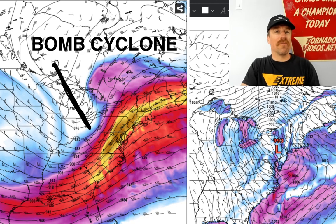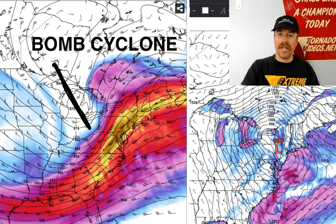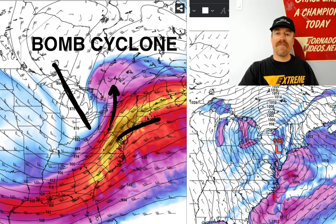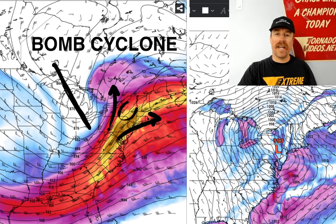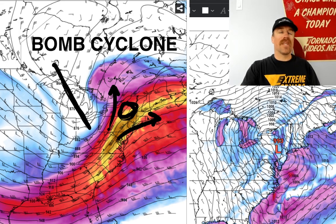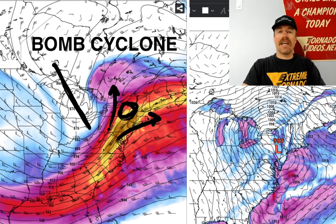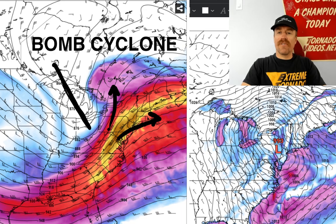The bomb cyclone is dropping well in excess of 12 millibars — in fact, 24 millibars over a 24-hour period. Downstream at 300 millibars, when you get a negatively tilted trough like this, you get what's known as difluence at 300 millibars. That creates a vacuum cleaner effect underneath it, and that leads to the rapid deepening of that surface low. Surface pressures fall rapidly beneath that difluence aloft.